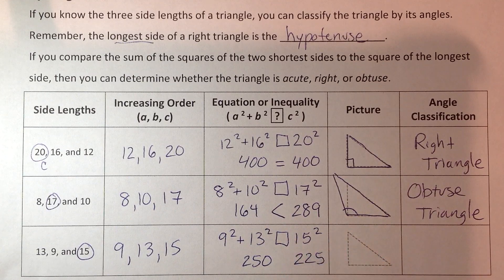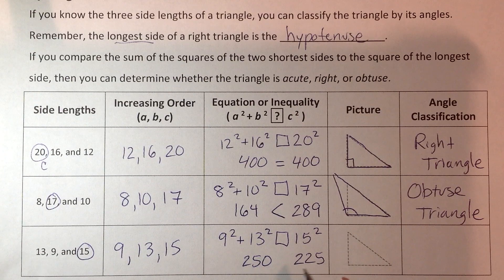So again, visualize they're not equal, so I have to make a decision. Is this obtuse or acute? Well, what happened to C, the longer one?